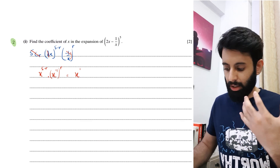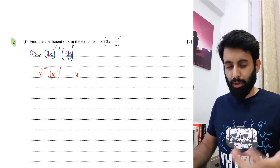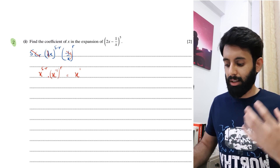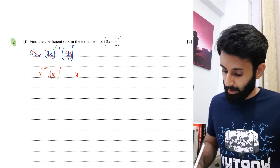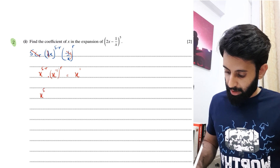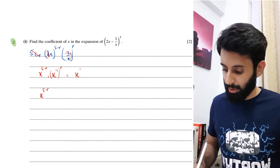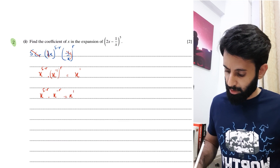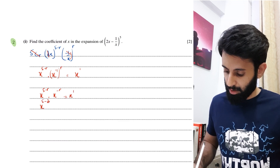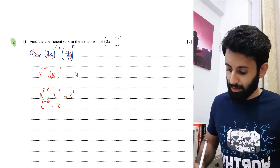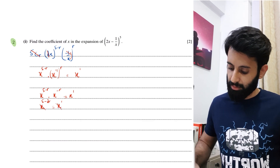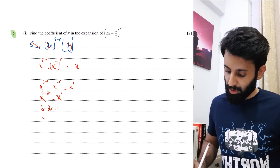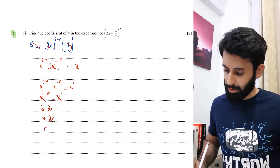Since we're looking for the coefficient of x, I set the x expression equal to x¹. If we wanted x² we'd set it equal to x², for independent of x we'd set it equal to x⁰. So x^(5−r) · x^(−r) = x^(5−2r) = x¹. Ignoring the bases and equating the powers: 5 − 2r = 1, so 4 = 2r, giving r = 2.